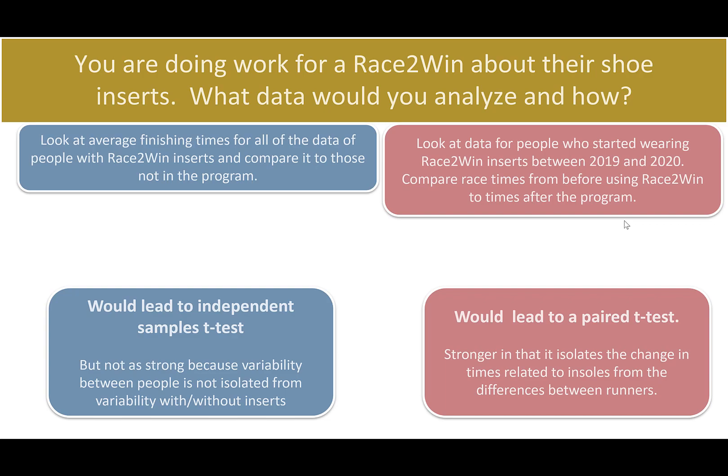For example, if someone's time goes from 19 minutes to 18.5 — a 30-second improvement — and another person's goes from 35.5 to 35 minutes — also a 30-second improvement — the paired t-test captures that consistent improvement without the variability between the 19-minute and 35-minute runners affecting the result. The experimental design could have issues since other things may have changed between 2019 and 2020. Ideally, you'd randomly assign who gets insoles. But statistically, the paired t-test is stronger because it isolates variability to just the change, not variation between subjects.